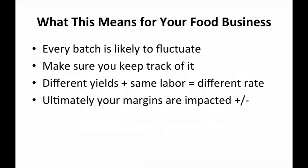This ultimately means that every single batch you make has a different cost. I know that's really hard to think about, but it's true — your cost just doesn't stay at $1.80 a unit while you sell it for $6. This is why you need to keep track of it. One good example: if you have the same labor rate, say $15 an hour, but you're getting different yields, that's ultimately a different labor rate per unit, whether it's cookies, mustard, barbecue sauce, or prepared meals.